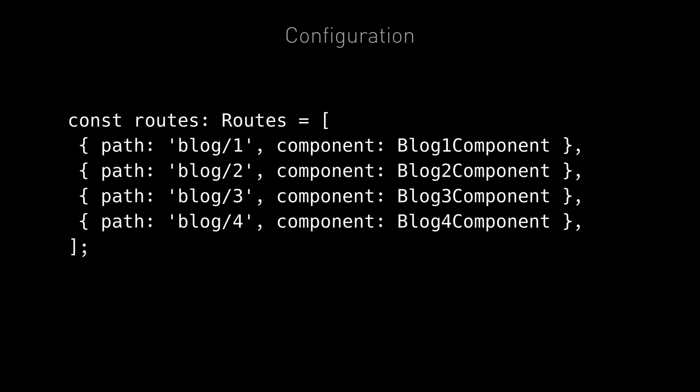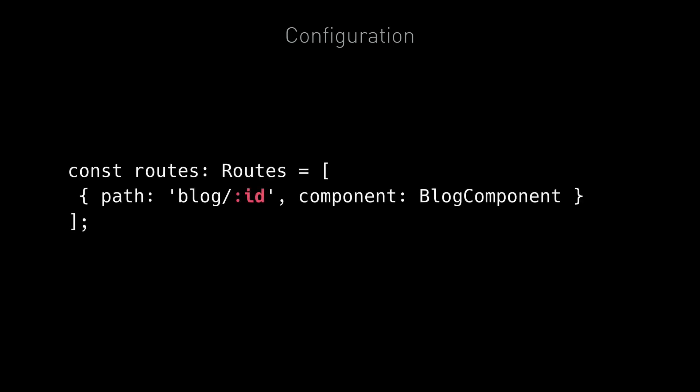But a better solution is to have one route with one component called blog component and pass to the blog component the number part of the URL. That's what we call a parameterized route and it would look something like this. We have one component called blog component and the path has a variable called ID. We know it's a variable since it begins with a colon.